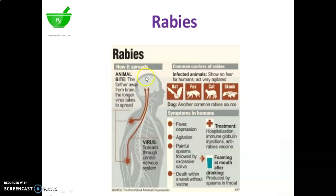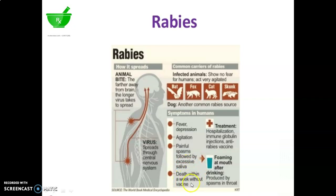How Rabies spreads: first of all through animal bite. The further away from the brain, the longer the virus takes to spread. The virus spreads through the central nervous system. The symptoms in humans are fever, depression, agitation, painful spasms, followed by excessive saliva, and death within a week without vaccine.